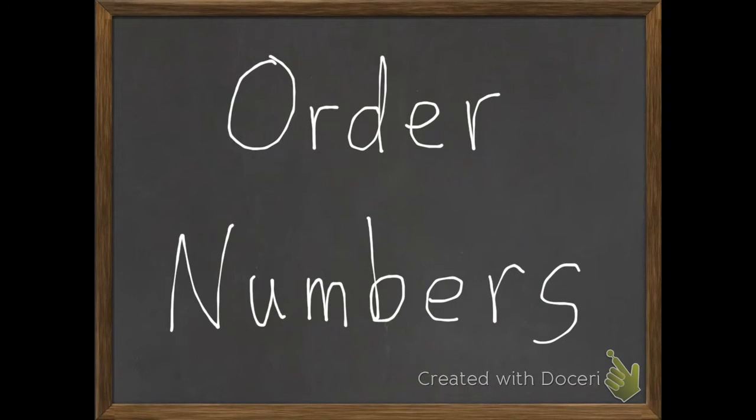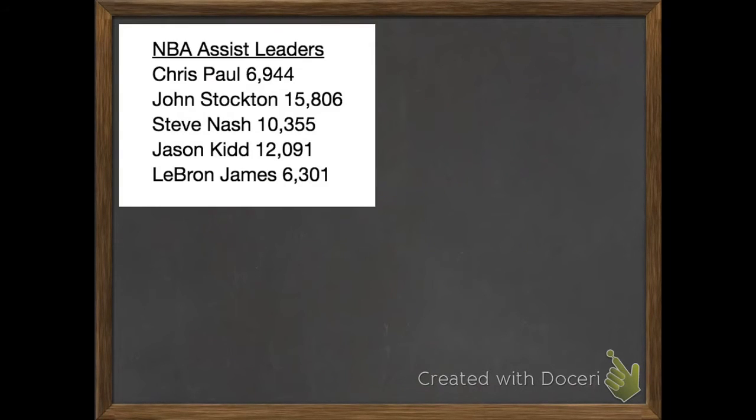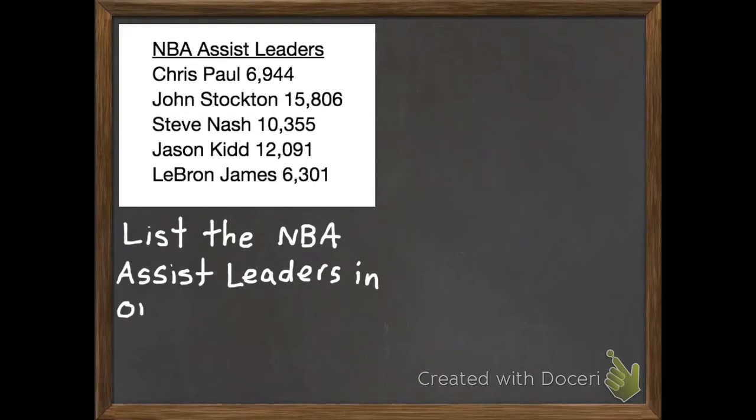Today we are going to order numbers. There's new vocabulary, so we're going to jump right into example number one. Yesterday we compared two numbers. Today we are going to order a group of numbers. So here are some of the NBA Assist leaders, and we need to list the NBA Assist leaders in order from greatest to least.